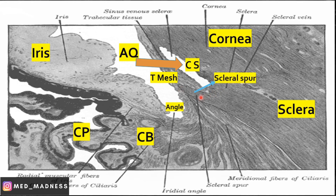This triangular piece of tissue formed by the sclera projecting into the cornea is called the scleral spur. Note that the scleral spur is attached anteriorly with the trabecular meshwork and posteriorly with the ciliary muscles, which are present in the ciliary body.